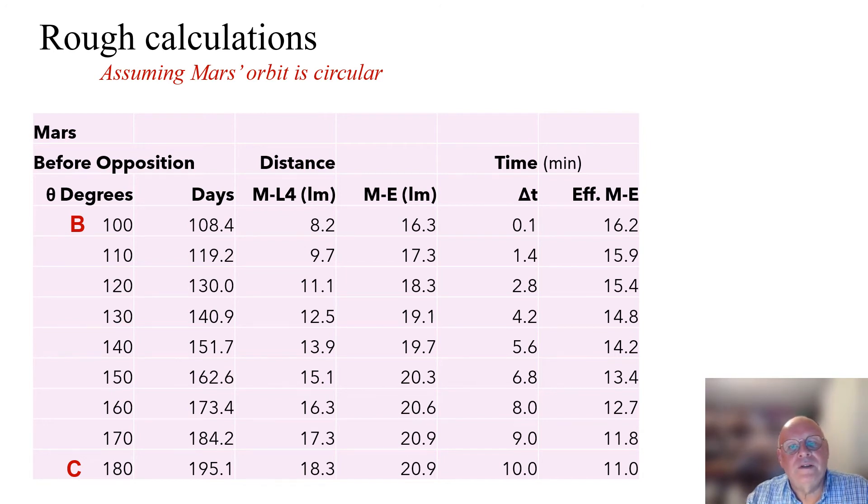For example, at B, when Mars is at B, the distance is very close to zero. But when Mars is in conjunction at C, the distance is 10 minutes. We have to subtract the delta T from the Mars-Earth distance in light minutes to give the effective Mars-Earth distance in light minutes. And that's the final column.